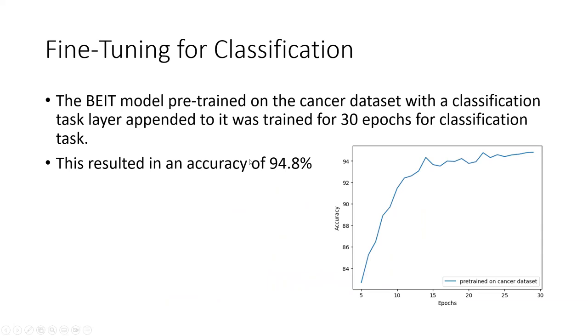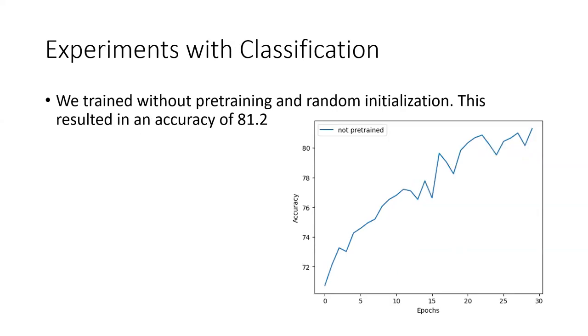Now the pre-trained BEIT model is ready for fine-tuning. Fine-tuning for classification: the BEIT model pre-trained on cancer dataset with a classification task layer appended to it was trained for 30 epochs. This resulted in an accuracy of 94.8 percent. As you can see it converged pretty quickly for a ViT. To keep this result in perspective we have done a couple of experiments. One experiment with classification: we have trained it with random initialization which is not pre-trained for same 30 epochs. This resulted in an accuracy of 81.2. As you can clearly see our model has converged way quicker.